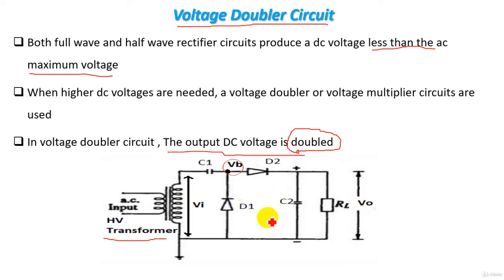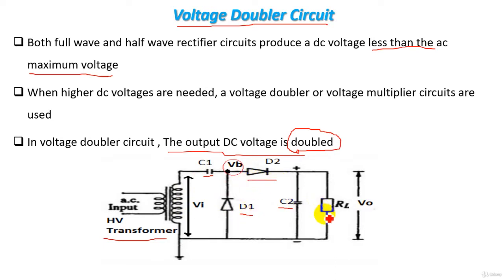The voltage doubler circuit consists of two capacitors: the first capacitor is C1 and the second capacitor is C2, connected as shown. We also use two diodes: diode D1 and diode D2. We also have our R_L which represents our load, and V_output is the output voltage. We can predict that the output voltage will be high voltage DC, and that the output voltage will be doubled compared to other rectification circuits.